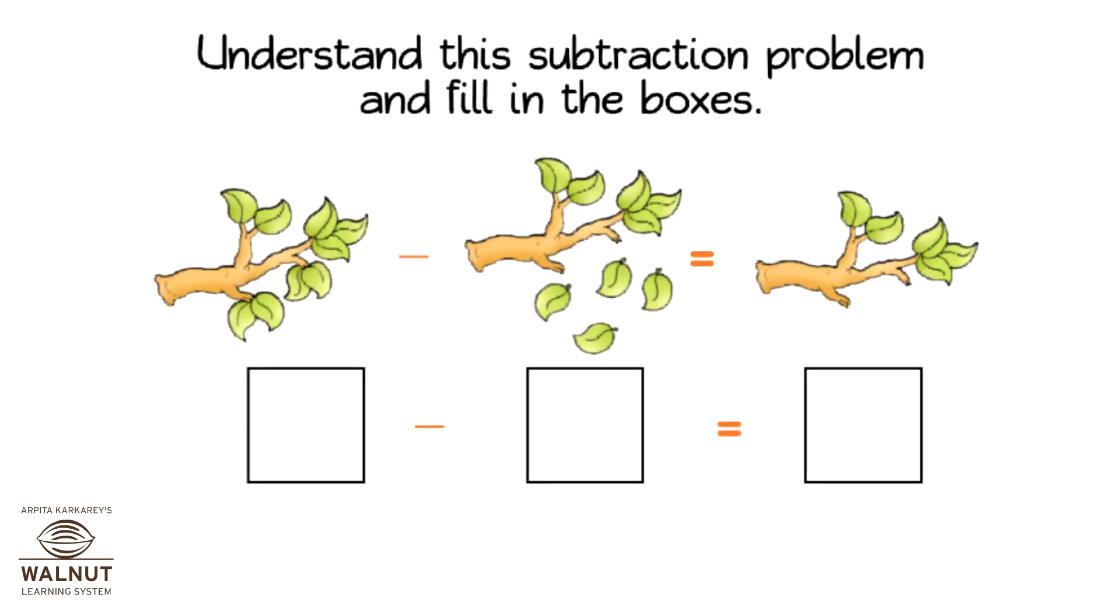There are 9 leaves on a branch. 4 leaves fall off. How many leaves on the branch? 9 minus 4 is equal to 5.